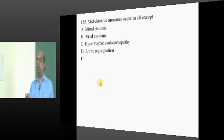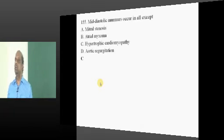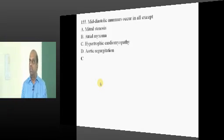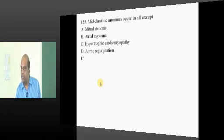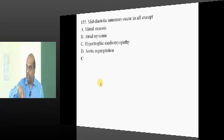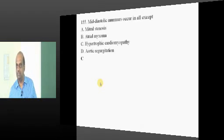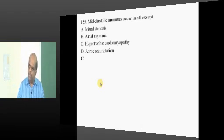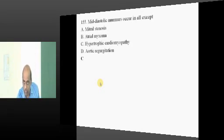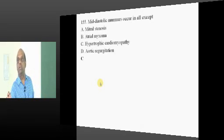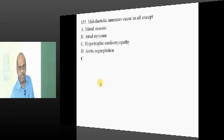Even in atrial myxoma, why do you hear a mid-diastolic rumble? When the left atrium pushes blood into the ventricle during diastole, the myxoma offers resistance — hence MDM. Why in mitral stenosis? Same problem. In aortic regurgitation, backward flow from the aorta causes resistance to forward flow from atrium into ventricle as the ventricle is getting filled during diastole.